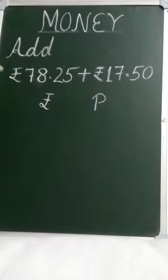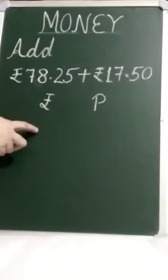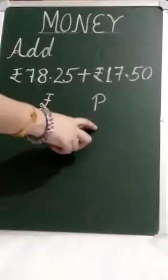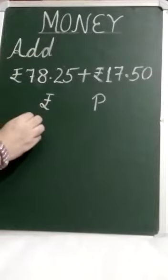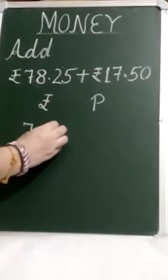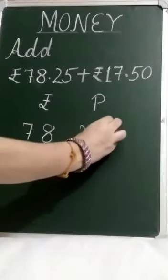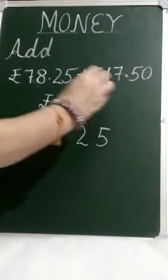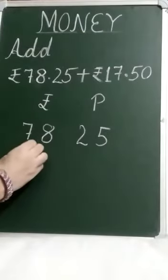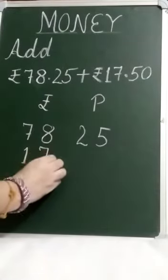Then we write rupees under rupees column and paise under paise column. First of all we write 78 rupees 25 paise. Then 17 rupees 50 paise.